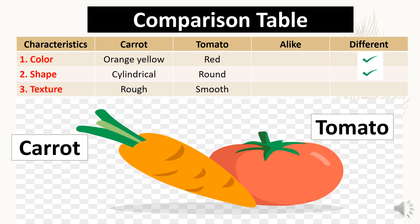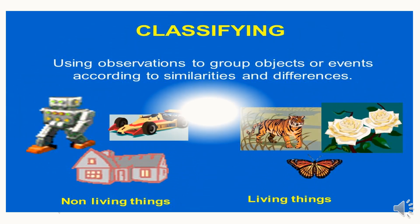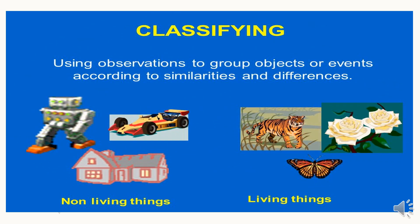Are their textures alike or different? Different — very good! If you already master the skill of comparing, the next process skill will be very easy. This is classifying. Classifying is using observations to group objects or events according to similarities and differences. We have here an example: these are groups of non-living things and living things. In the non-living things group we have a robot, a race car, and a house.